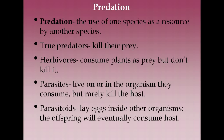Predation is the use of one species as a resource by another species. True predators will kill their prey. Herbivores will eat plants but don't kill them, so they grow back. Parasites live on or in the organism they consume but rarely kill the host. Parasites that cause disease are called pathogens — like viruses, bacteria, fungi, protists, or worms. Then you have parasitoids, which are organisms that lay eggs inside another organism, and as the offspring grow, they eventually consume the host from the inside out — certain wasps and flies do this.